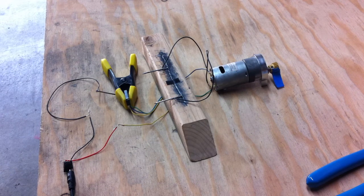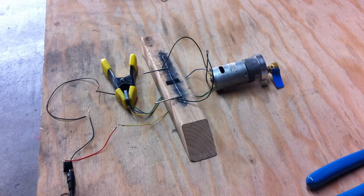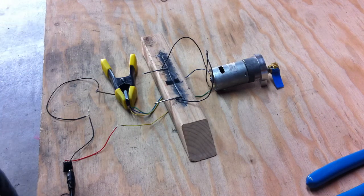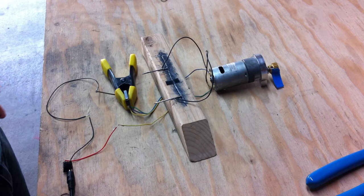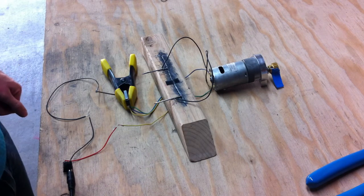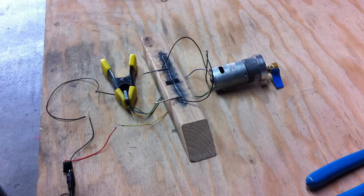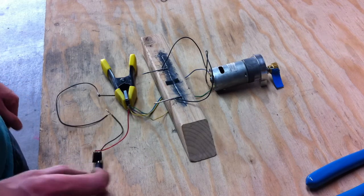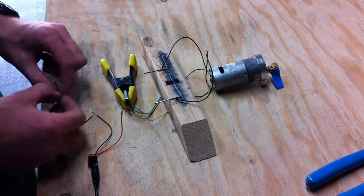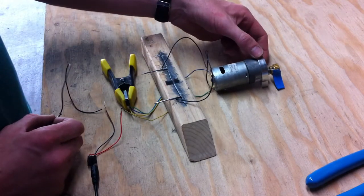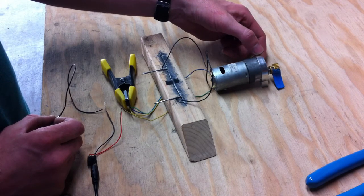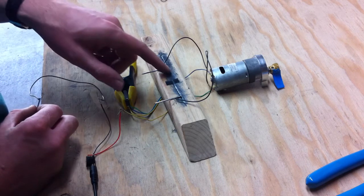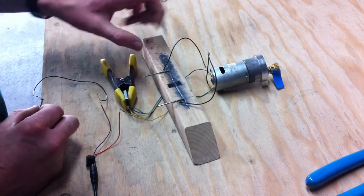All right, today is October 18th, 2014, and this is the prototype for the controller for the camera jib. Here's the 12-volt DC power supply and here's a 20 RPM gear motor.